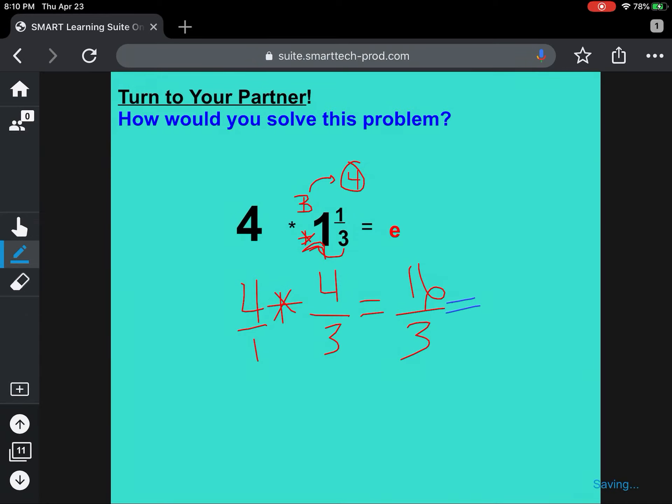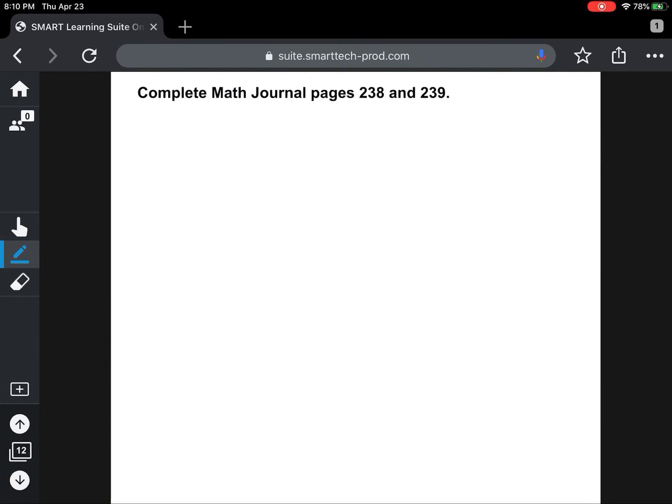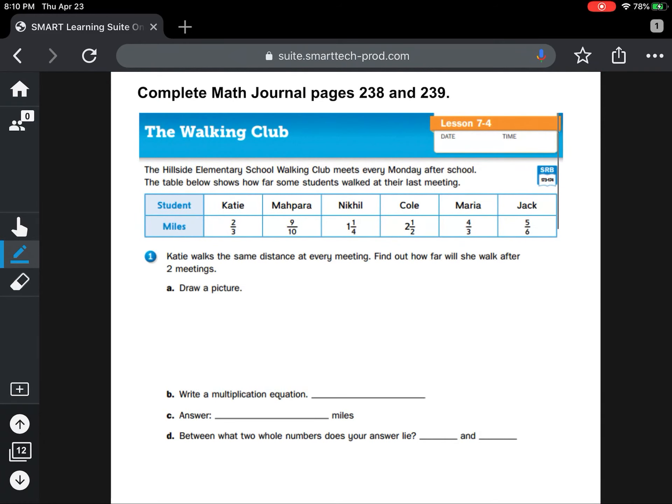When converting this answer, you should have said 3 goes into 16 five times, because 3 times 5 is 15. Then you would have 1 left over, and 3 stays the denominator. So 4 times 1 and 1/3 equals 5 and 1/3. Now let's move on.